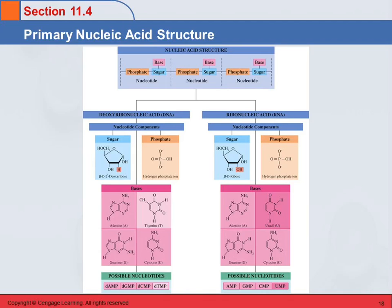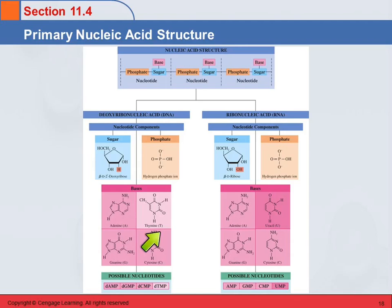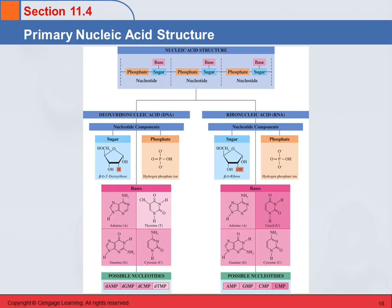This is a helpful table showing you the overall nucleic acid structure. For the DNA, this is the sugar, there's the phosphate, and these are the 4 possible bases. For the RNA, here's the sugar — this does have an oxygen here. The phosphate is the same, and all the bases are the same except for the uracil. So uracil is only in ribonucleic acid, and thymine is only in deoxyribonucleic acid. Those are important things to know.